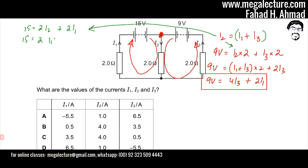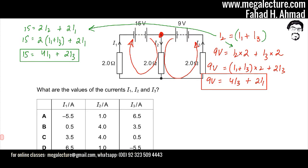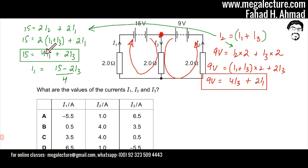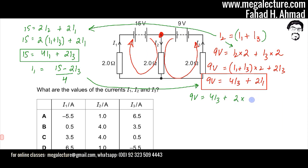After substituting i2 = i1 + i3 into the 15 volt equation, the expression becomes: 15 = 2·(i1 + i3) + 2·i1. So that gives us: 15 = 2i1 + 2i3 + 2i1. I now take the value of i1 from this, making i1 the subject: i1 = (15 − 2i3) / 4. I then substitute this value of i1 into the other expression from the 9 volt loop.